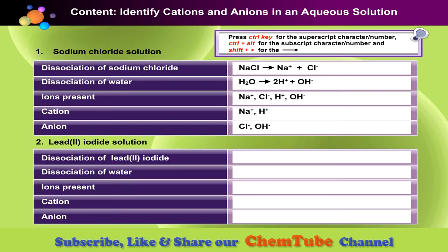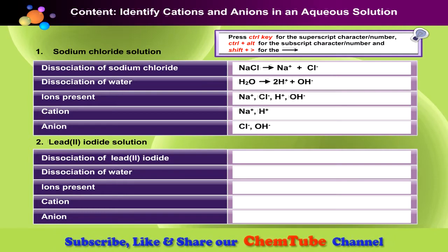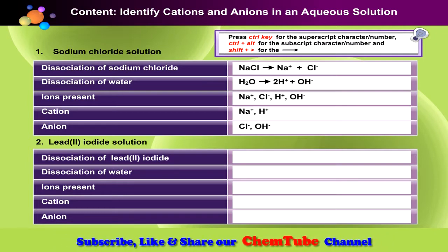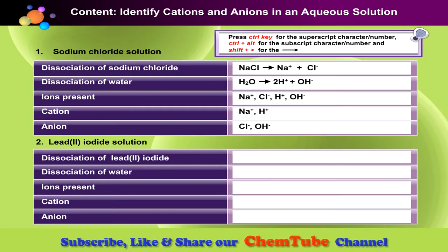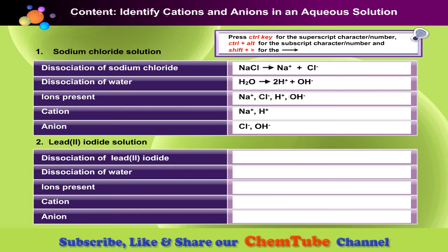Now let us use the information table to identify the cations and anions present in a given solution. The first example is given as guidance. Press Enter when you are done.